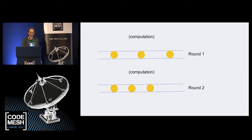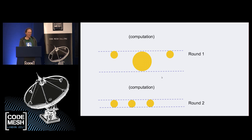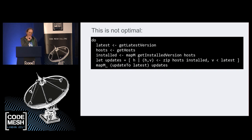One problem with doing rounds is what happens when one I/O item is much more expensive than the others — we end up doing computation much later than we would have if they were all the same size. This is a limitation inherent sometimes in the code we write. Going back to the earlier script example, it turns out that wasn't the best way I could have written it. I'm mapping `getInstalledVersion` over all hosts and have to get back the full list before going on to the next step.